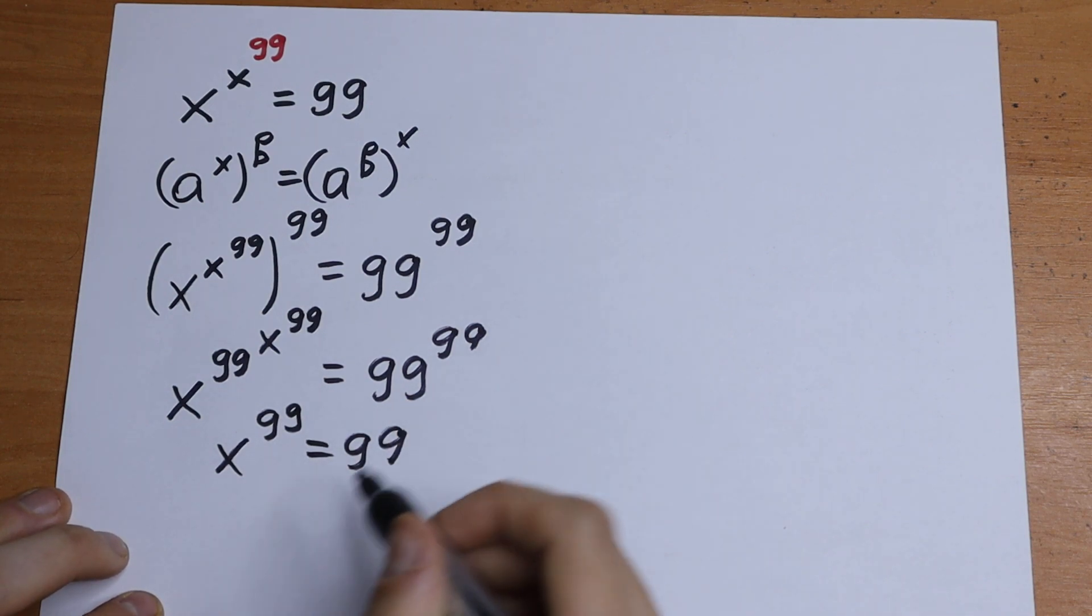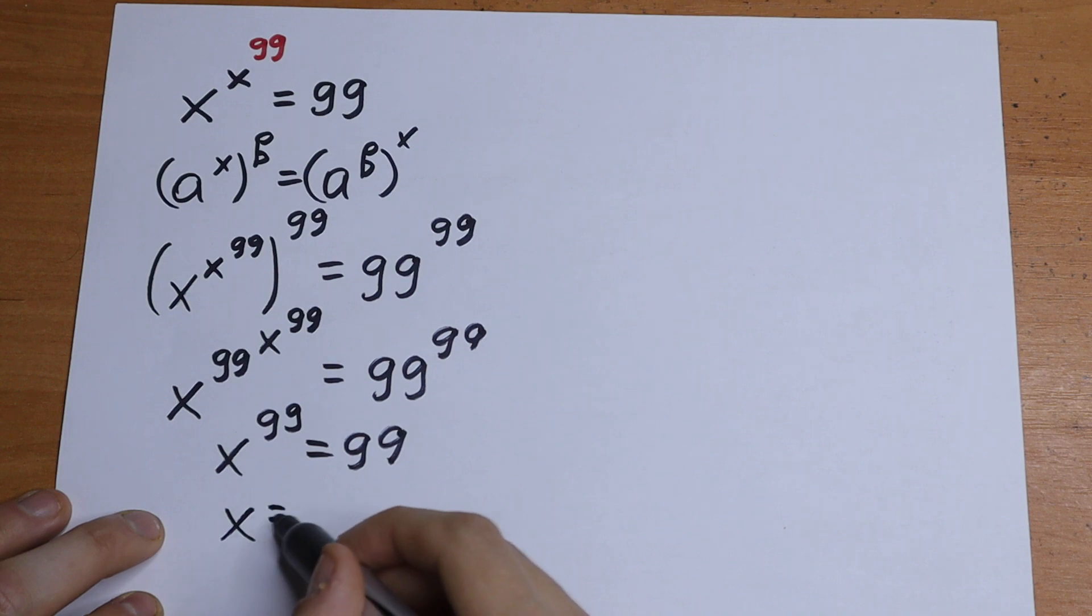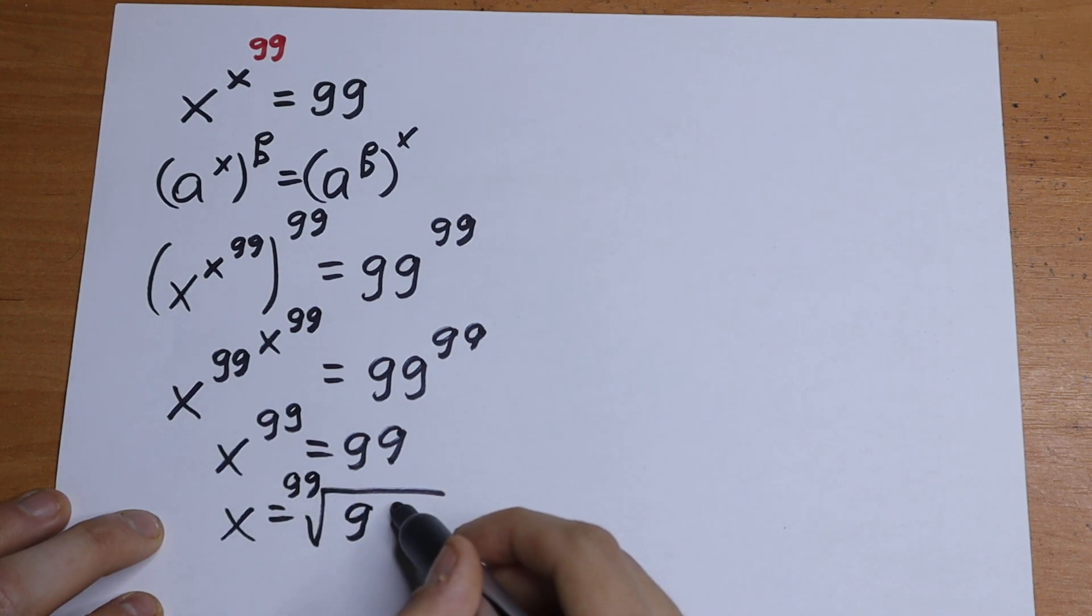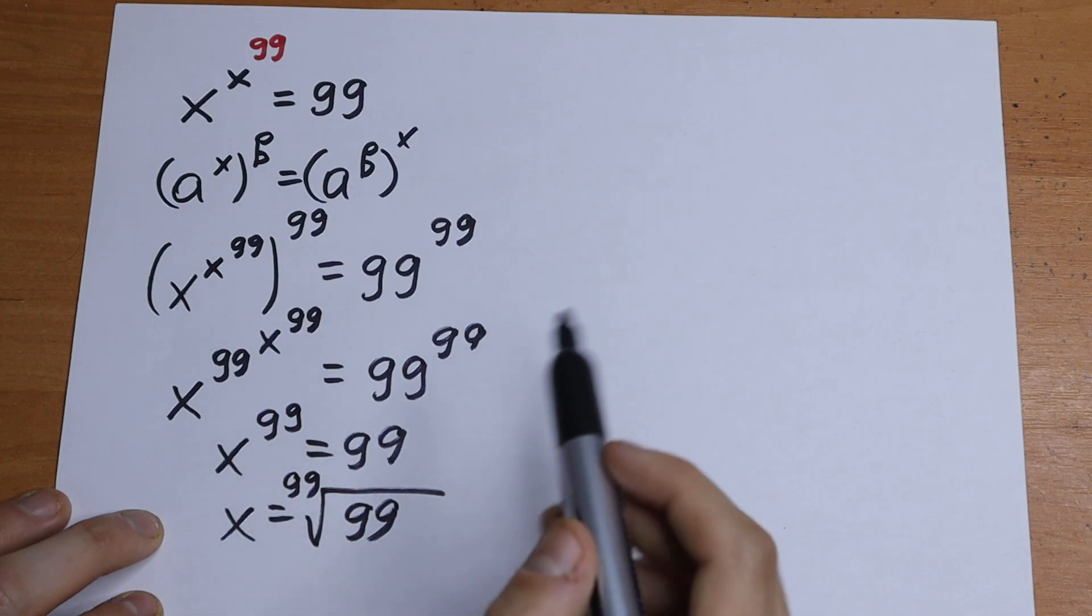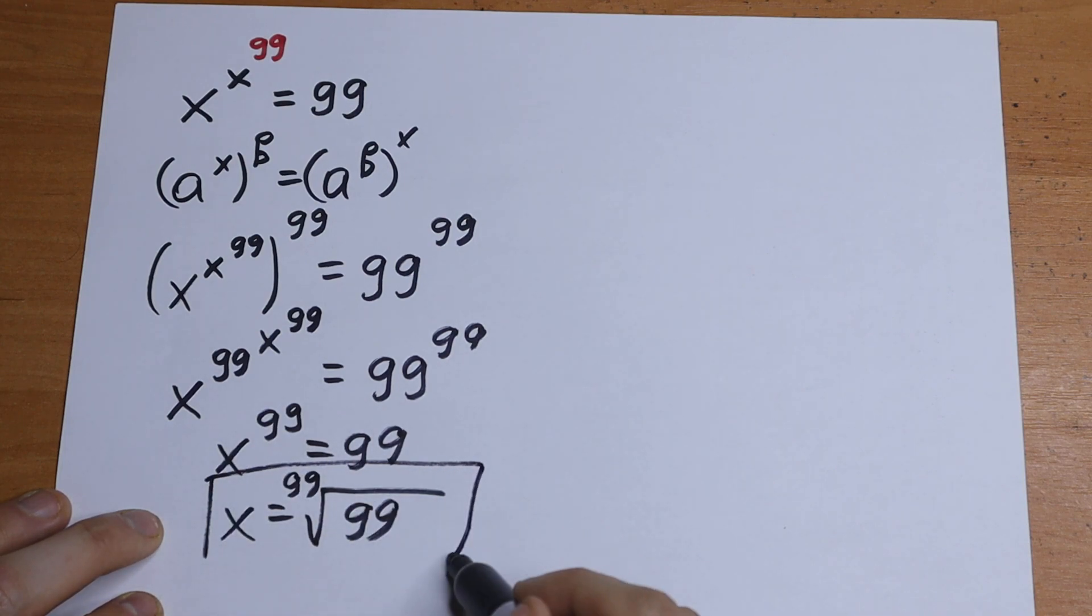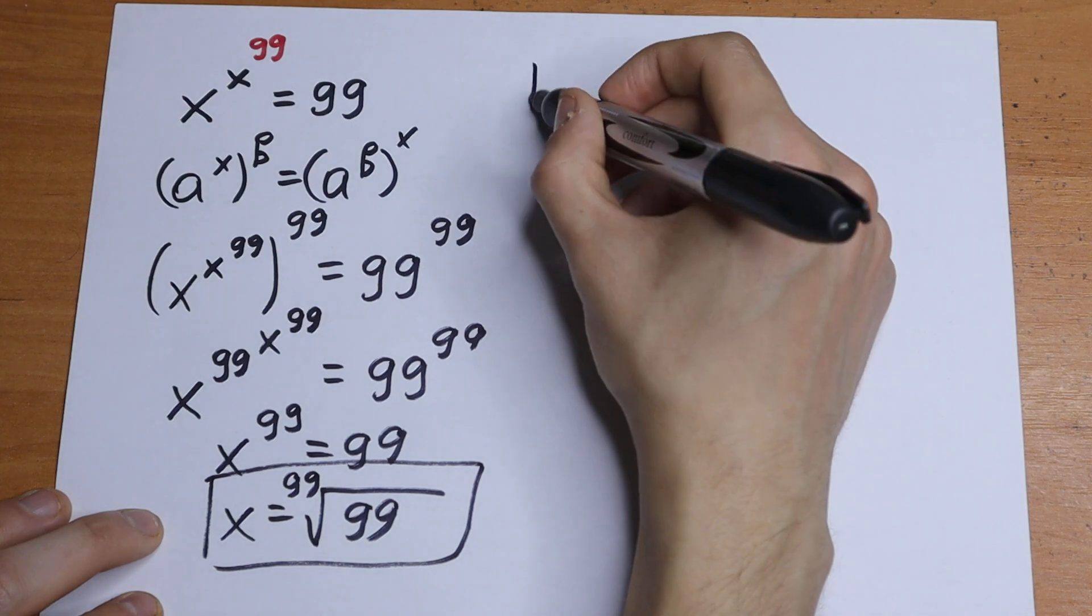Our answer will be x equal to the 99th root of 99. Taking 99th root from both sides, and this is the answer. Let's prove this, let's try to check it.